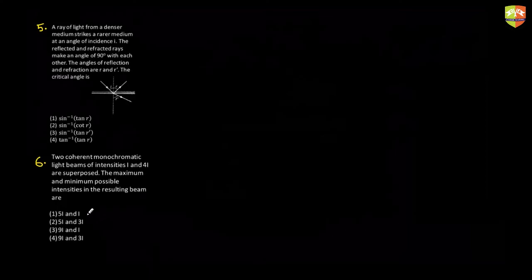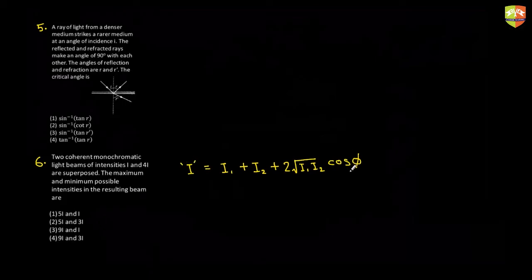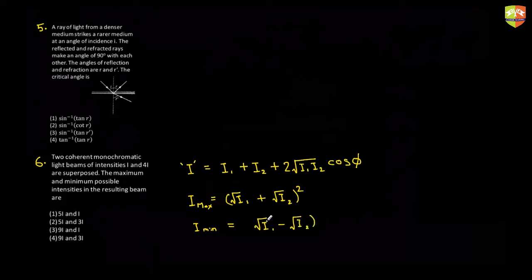For question six: the intensity of two interfering waves with intensities I1 and I2 is given by I = I1 + I2 + 2√(I1·I2) cos φ, where φ is the phase difference. Intensity is maximum when cos φ = 1, giving I_max = (√I1 + √I2)², and minimum when cos φ = −1, giving I_min = (√I1 − √I2)². This comes out to 9I and I respectively.